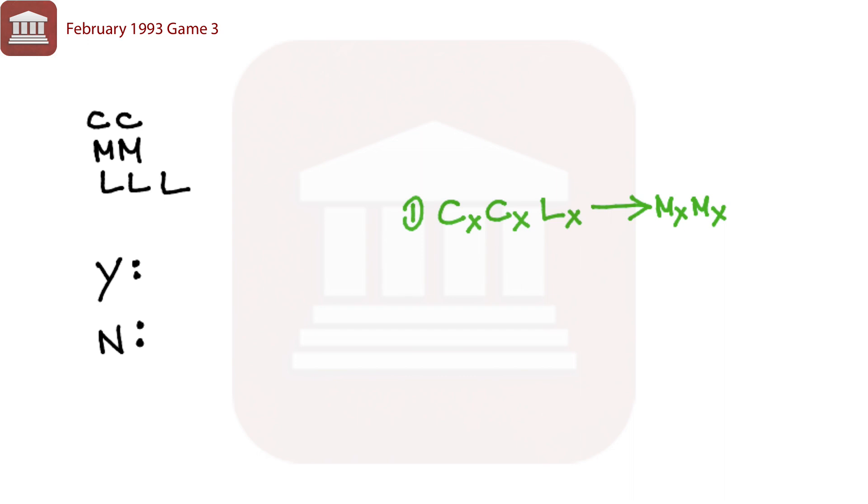The contrapositive would be if both moderates aren't voting the same way, well then we cannot see two conservatives and two liberals voting that way.